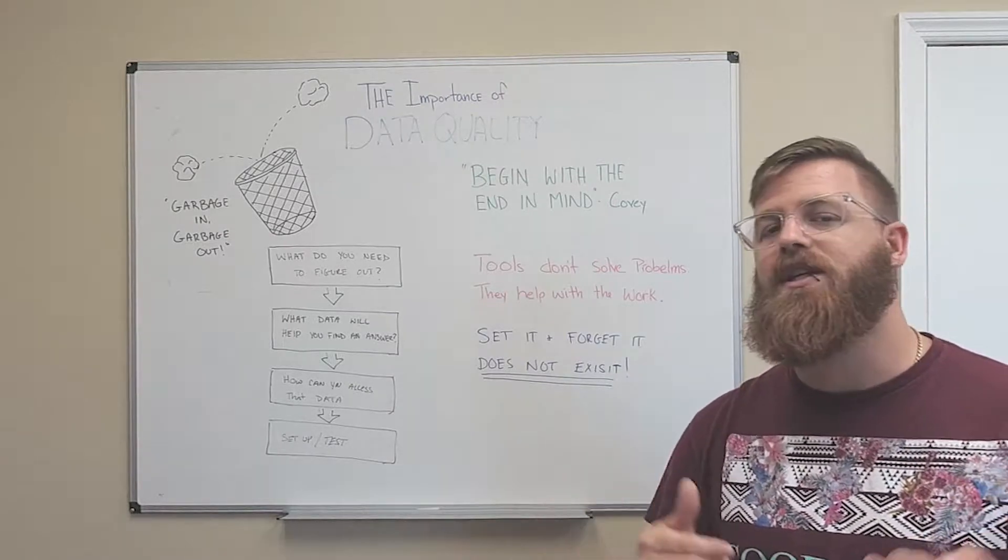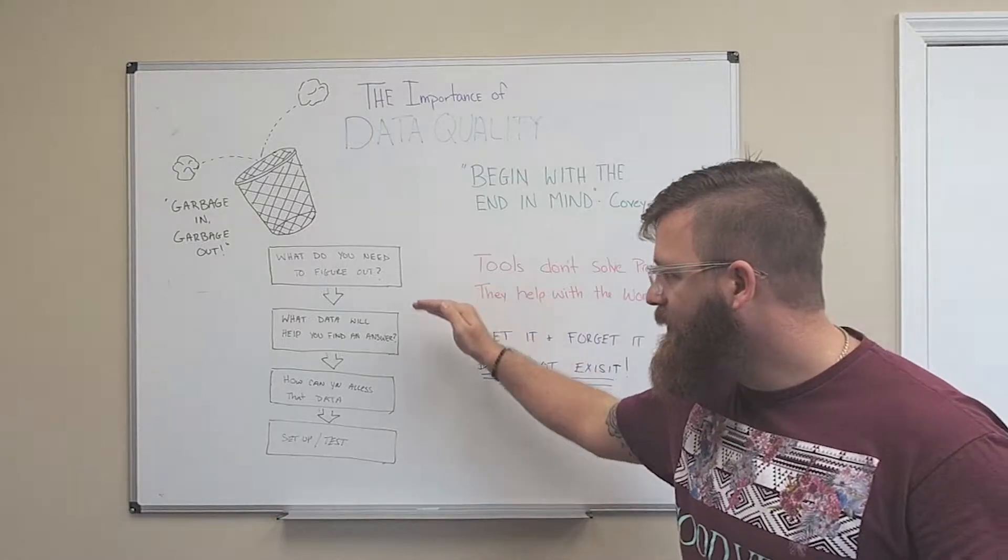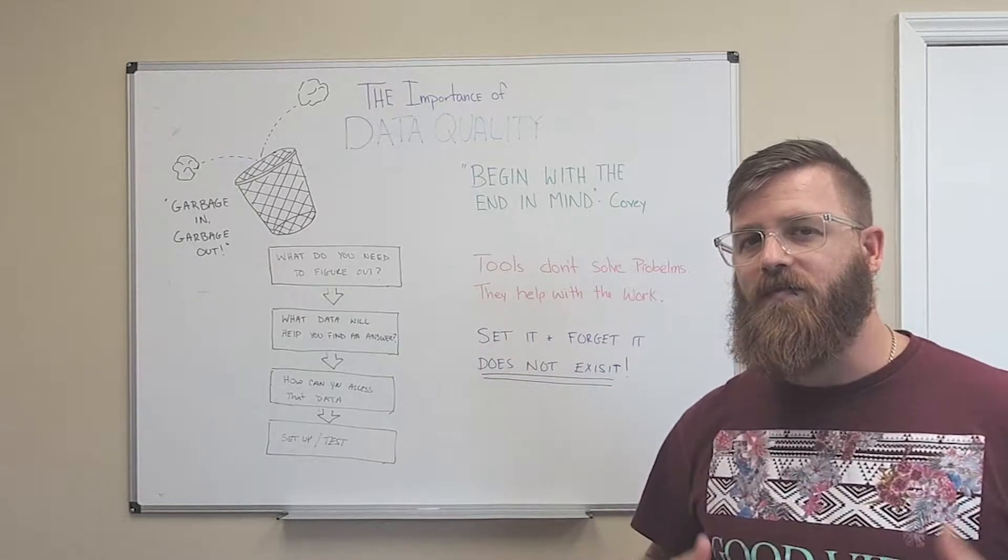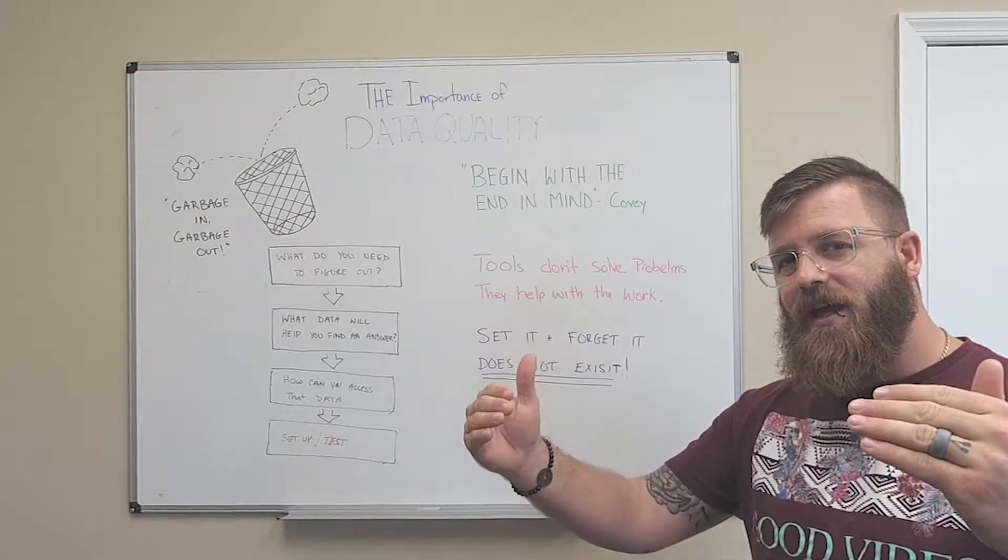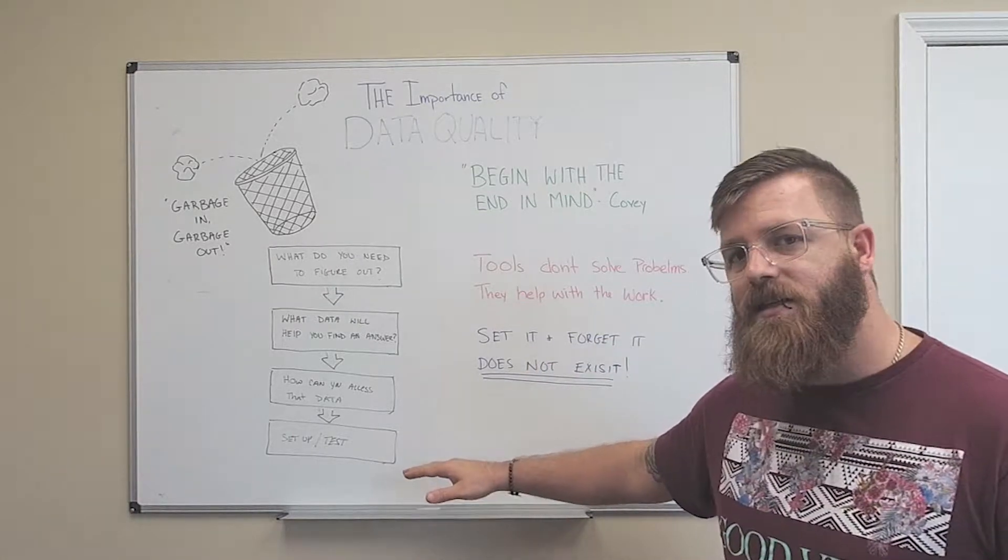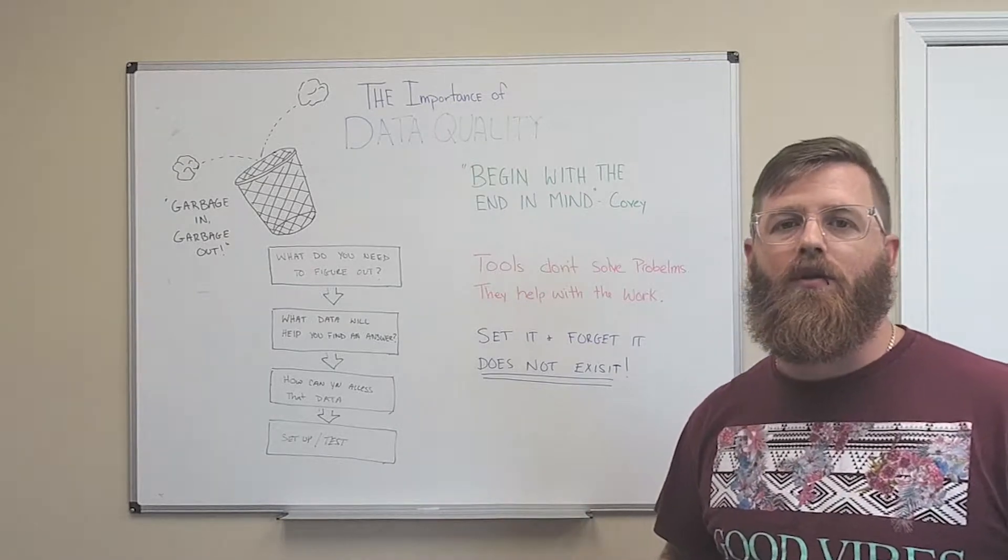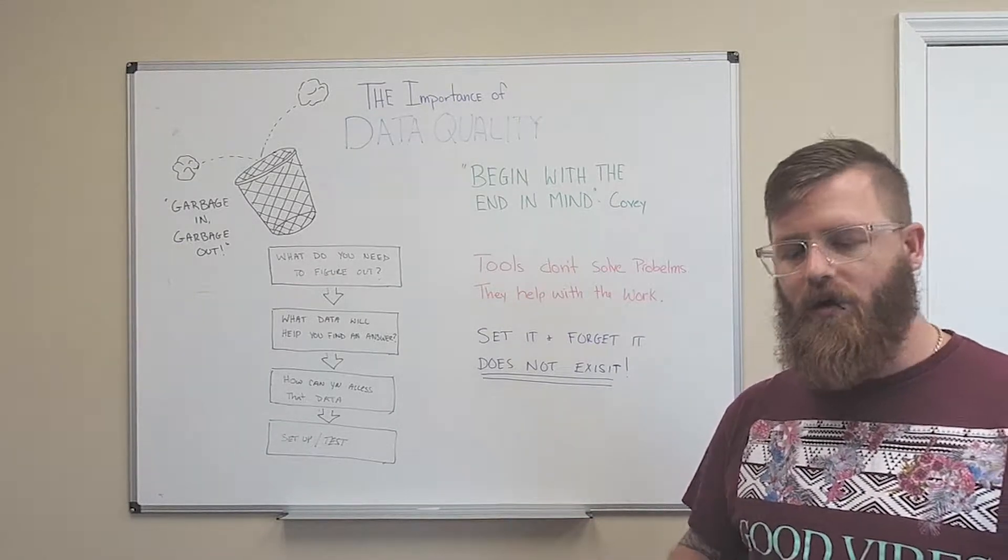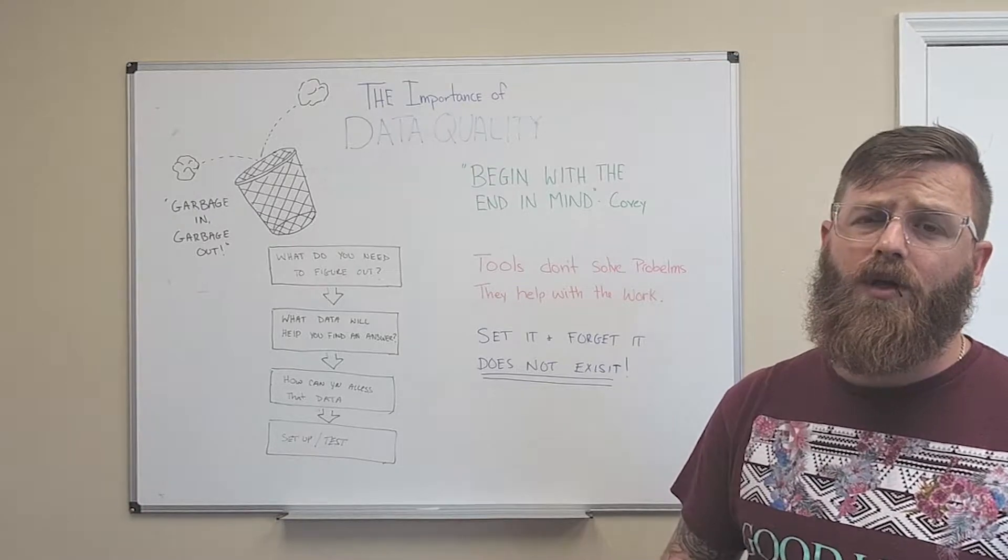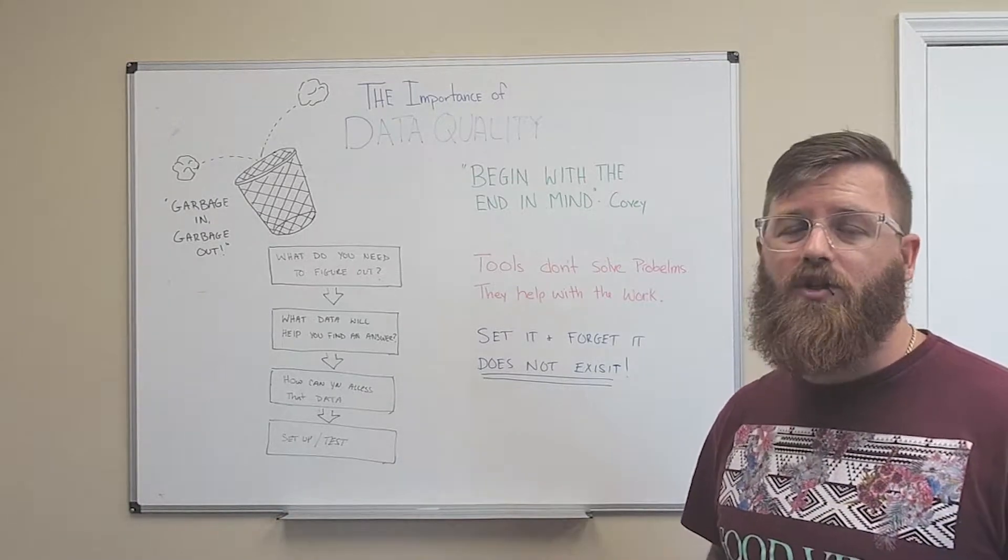When you understand what you want, you can reverse engineer the process and understand what you need. There's a little flow chart here with four things and four questions you want to ask in this reversed order. Instead of just setting up and testing, start with the end in mind. What do you want to figure out? Do you want to learn what your website users are doing, app users, people working on phone, financial numbers? What problems are you trying to find answers for?